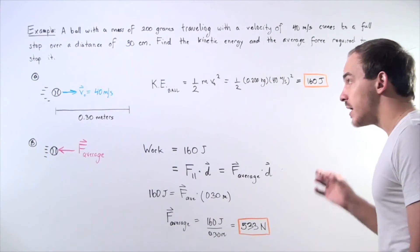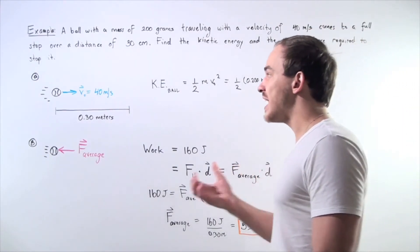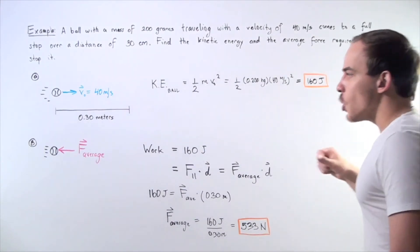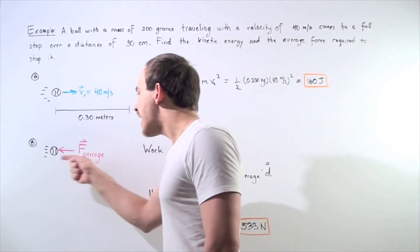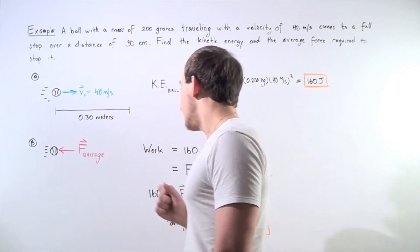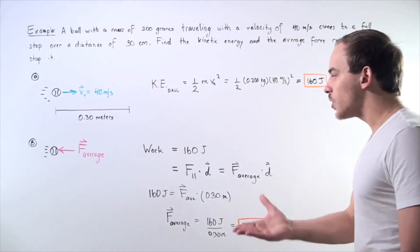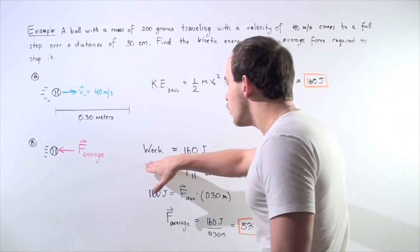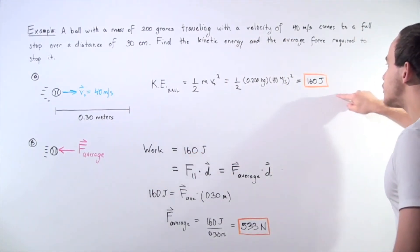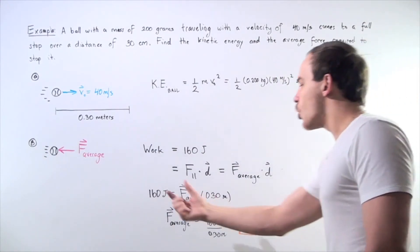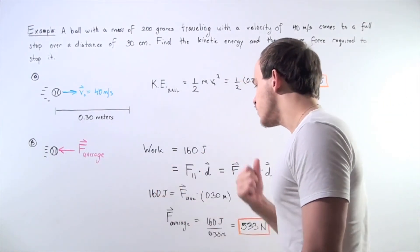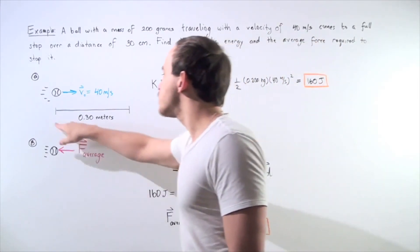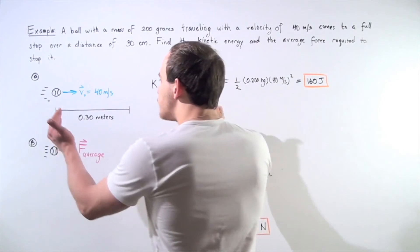The amount of work, the amount of energy we need to take away from the object is equal to this quantity. So in step B to find the average force acting on the object, we simply use our formula work equals force times displacement. We know the work. This is how much work we must do on the object to make it stop. So 160 joules of work equals our average force multiplied by our displacement over which our average force acts to stop our object.